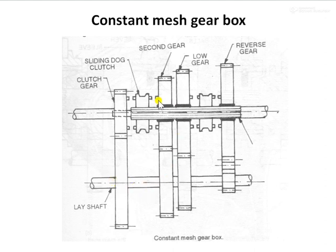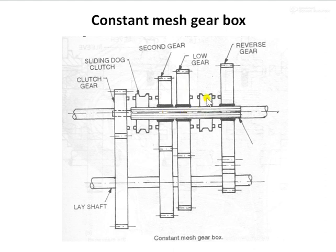To select first gear, we shift the dog clutch in the direction toward the first gear on the main shaft. The teeth of the dog clutch and the teeth of the gear engage, fixing that gear to the main shaft through the dog clutch. The main shaft then starts to rotate at first gear speed, and this rotation is transmitted to the output.